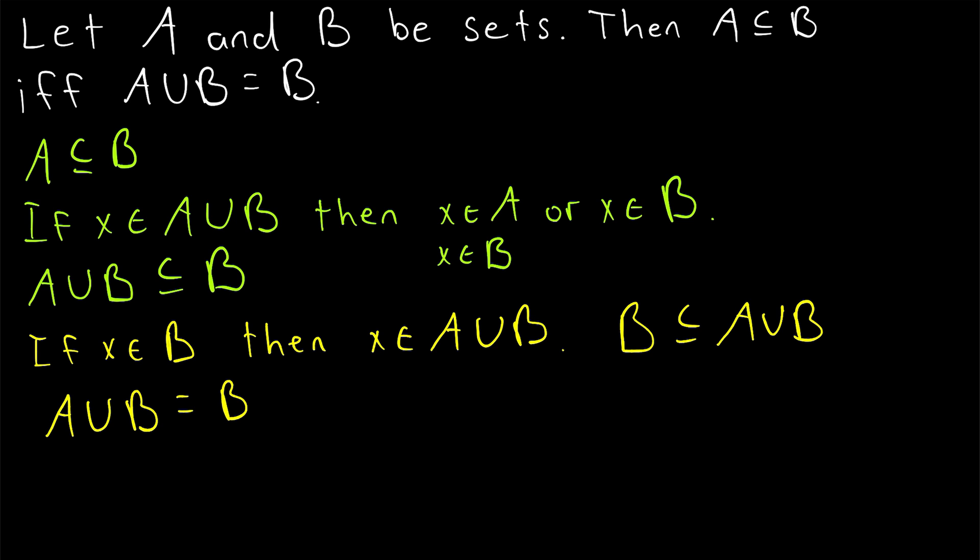So this proves the first direction, that if A is a subset of B, then A union B is equal to B. And you should take a moment to consider how this does cover the case where A or B is equal to the empty set. If you can't see why that is, let me know in the comments, and I'll try to help clear it up for you. You might also find some of my other lessons on the empty set to be helpful.